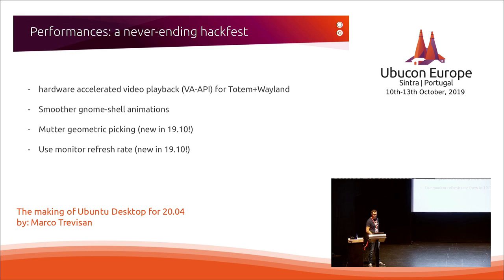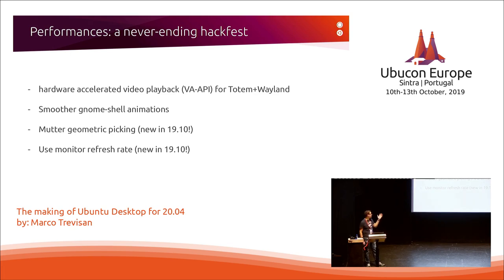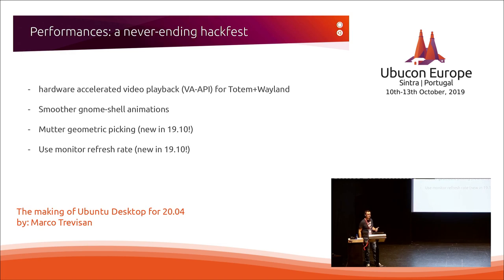Other performance work has been done largely by Daniel van Vugt: hardware-accelerated video in Totem, improved GNOME Shell speed in many areas from event handling to animation speed. New features landing in 19.10 allow saving lots of CPU resources especially when moving windows and even when moving the mouse pointer — because mouse pointer movement was making CPUs spin in some cases. Geometric picking allowed removing many unnecessary OpenGL GPU and CPU interactions which were a bottleneck.